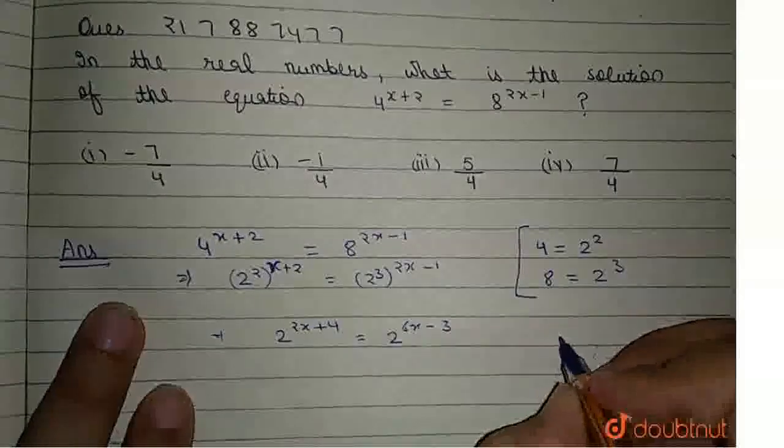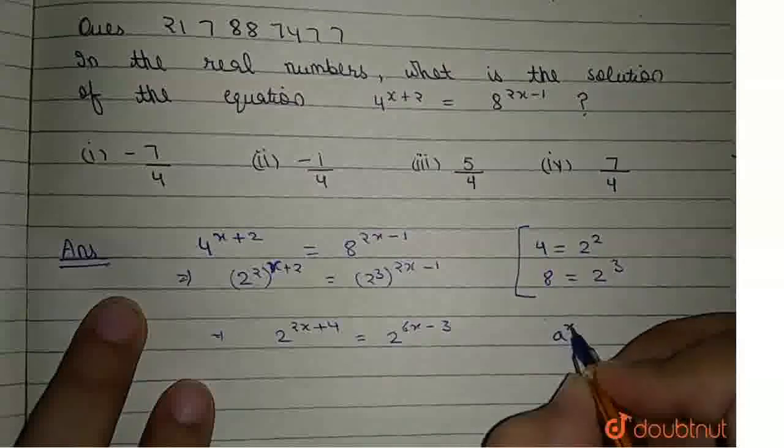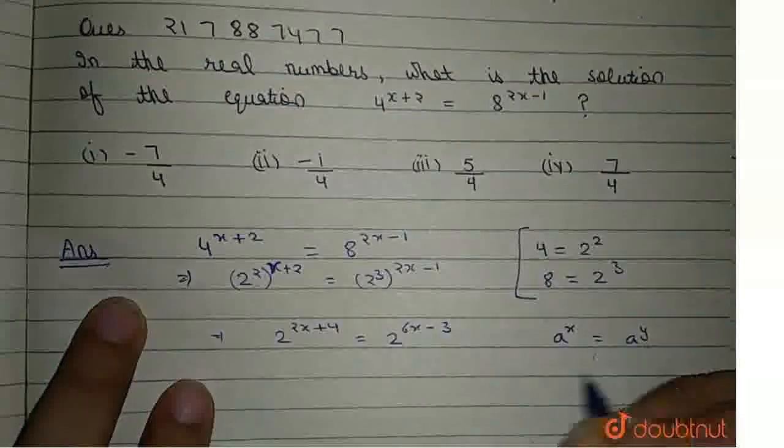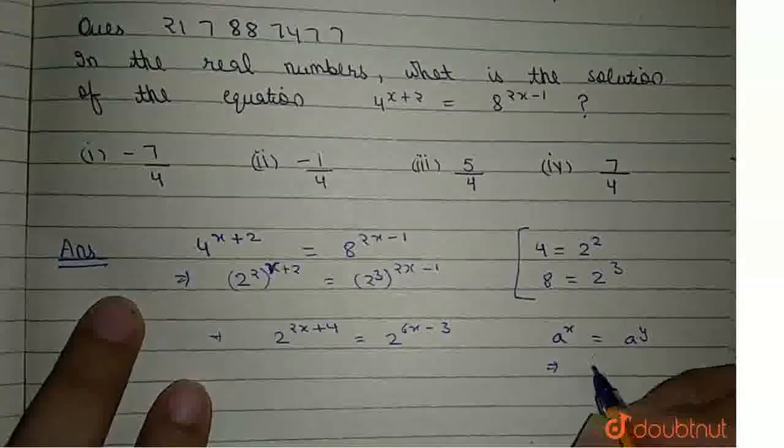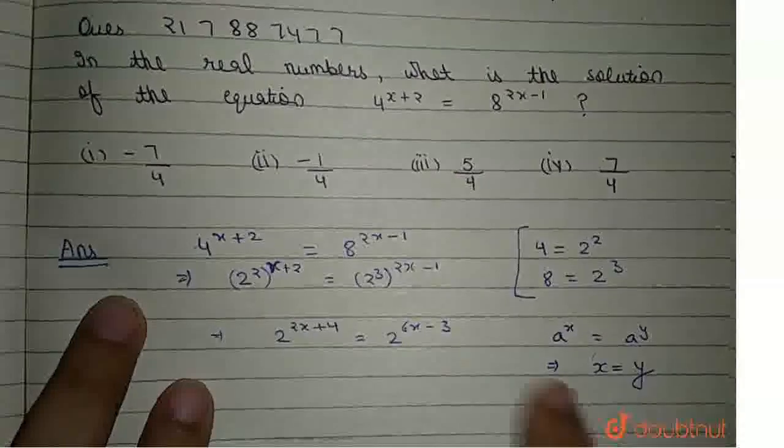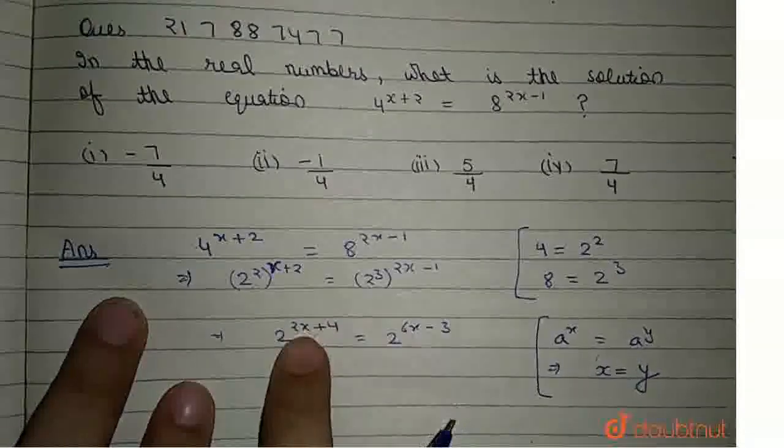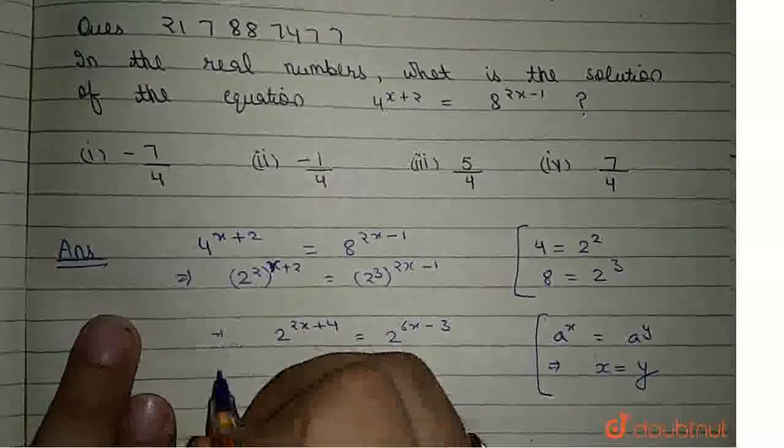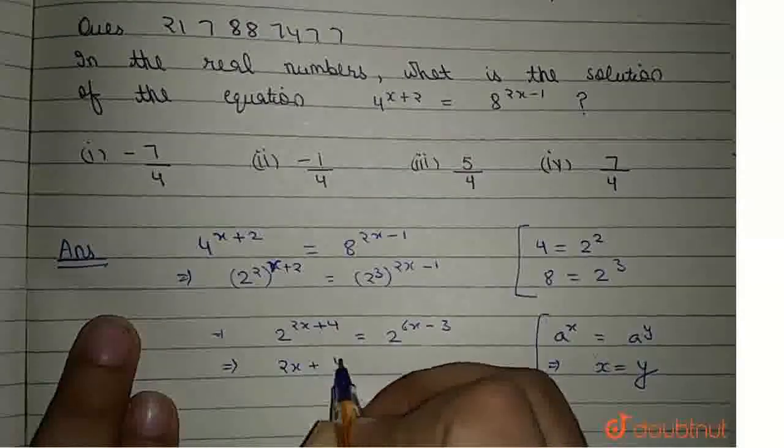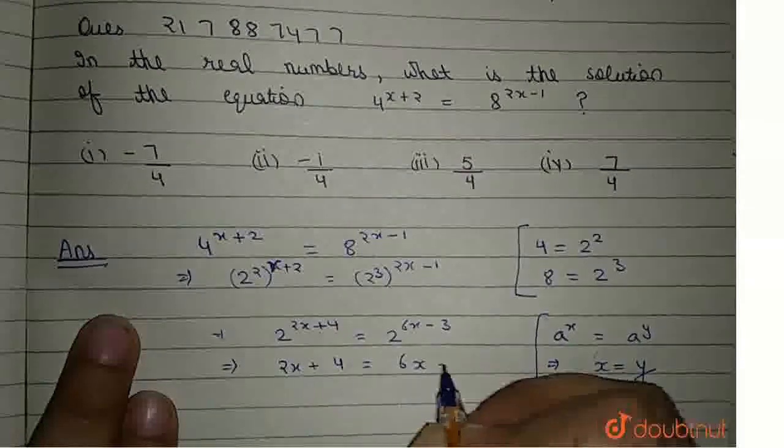We also know that if a^x = a^y, then x = y. Using this property, we get 2x + 4 = 6x - 3.